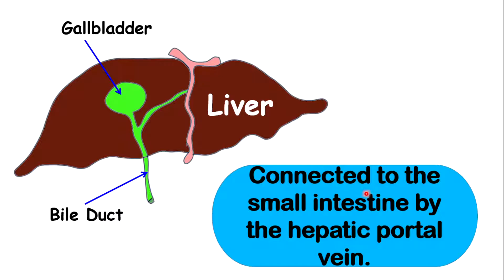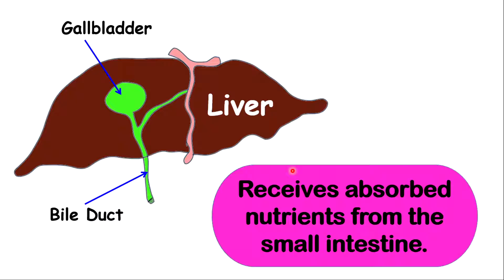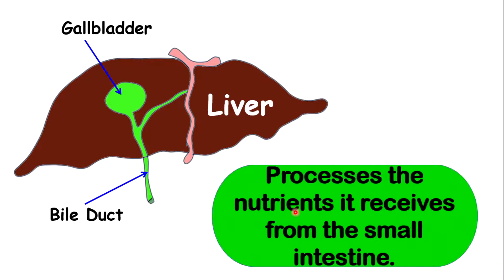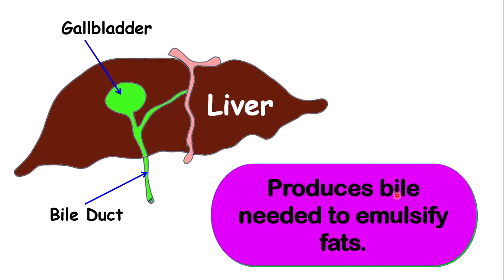The liver is connected to the small intestine by the hepatic portal vein. The liver receives absorbed nutrients — glucose and amino acids — from the small intestine and processes them. The liver also produces bile, which is needed to emulsify fats. Bile is produced by the liver, stored in the gallbladder, and then released into the small intestine by the bile duct.